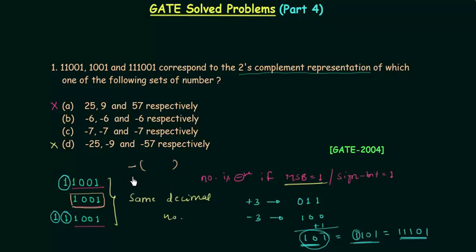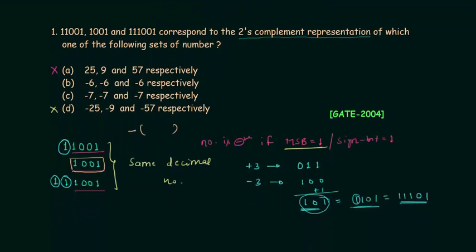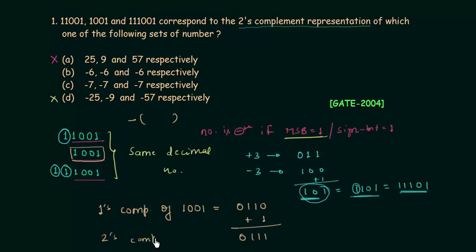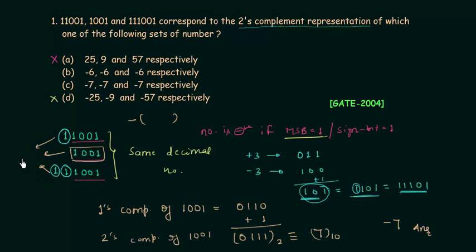Since we've already explained why all three represent the same decimal number, we'll just take the 2's complement of 1001. First, find the 1's complement of 10001: complement all bits to get 0110. Then add 1 to get 0111. This is the 2's complement of 1001, which equals 7 in decimal. Since the number is negative, the answer is minus 7.